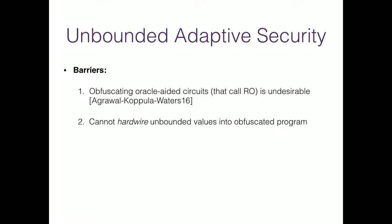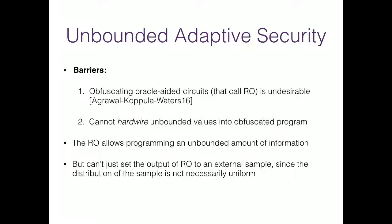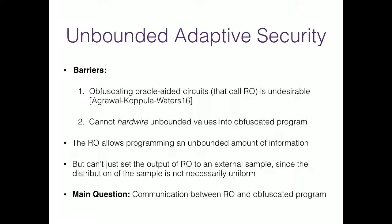The second problem is that within an obfuscated program one cannot hardwire an unbounded number of values, because this would blow up the size of the obfuscated program to an a priori unbounded amount. However, the random oracle does allow programming an unbounded amount of information. But we can't just set the output of the random oracle to an external sample since random oracle outputs must be uniformly distributed, whereas the samples we want are not necessarily so. We will need some means of communication between the random oracle and the obfuscation to generate samples in a secure manner.